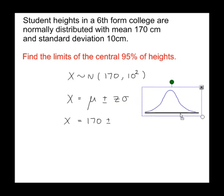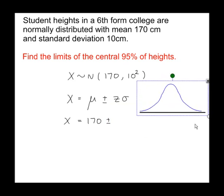along here we have the standard normal variable z, zero's in the center, and we're looking for the central 95%.